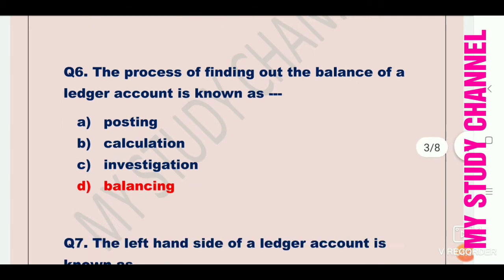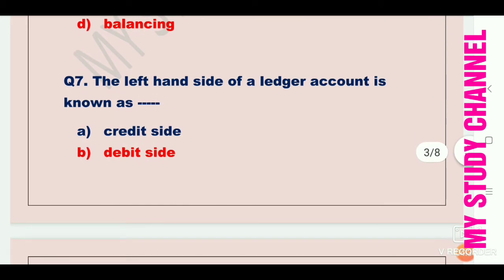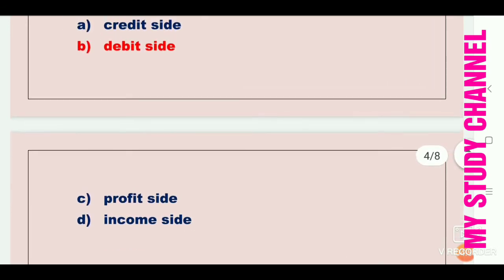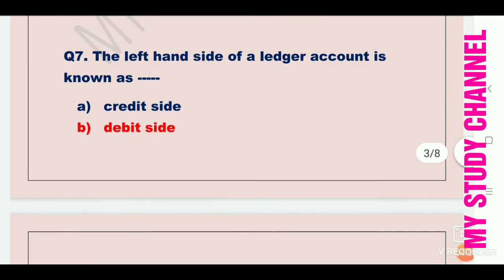Next question: the left hand side of a ledger account is known as. Option A is credit side, B is debit side, C is profit side, and D is income side. Option B is the right answer, that is debit side. The left hand side of a ledger account is known as debit side.